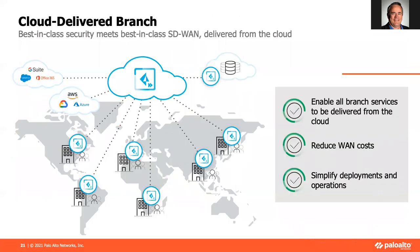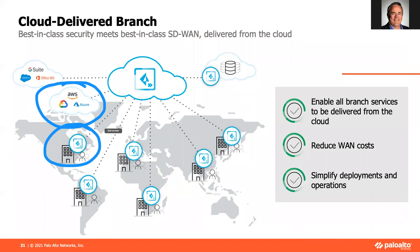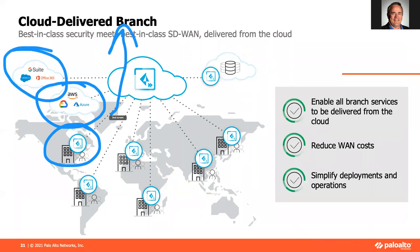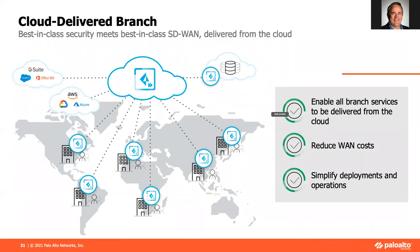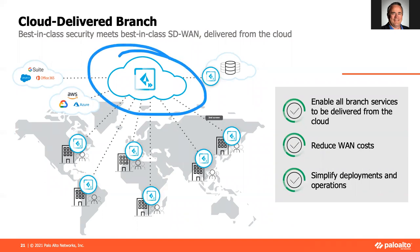All the stuff that used to go back to a big data center can now be delivered at the branch level — out to the clouds, SaaS applications, the Internet, or back to a data center — with all services delivered and managed centrally through the central cloud controller.